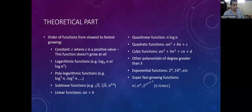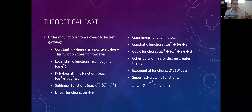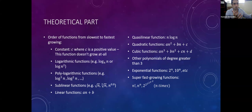Normally we use big O notation or asymptotic notation to represent time complexity, because we don't really care about the coefficients or the growth of a function for lower values of n. We care about the time complexity when n grows and becomes very large — when n goes to infinity.